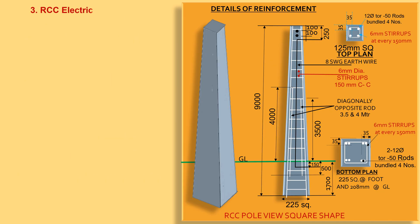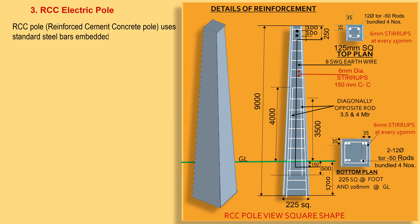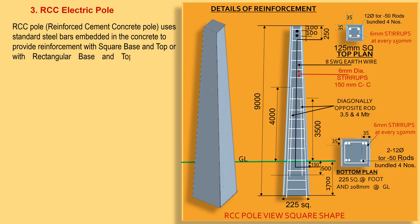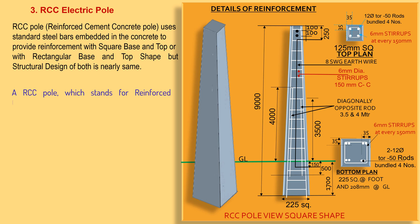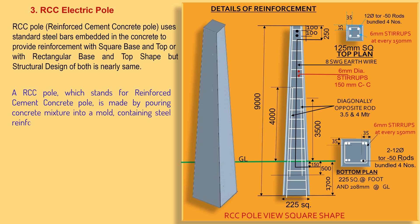An RCC pole — reinforced cement concrete pole — uses standard steel bars embedded in the concrete to provide reinforcement, with a square or rectangular base and top shape, though the structural design of both is nearly the same. An RCC pole is made by pouring a concrete mixture into a mould containing steel reinforced bars, allowing the concrete to set and cure, to make the pole strong and durable.